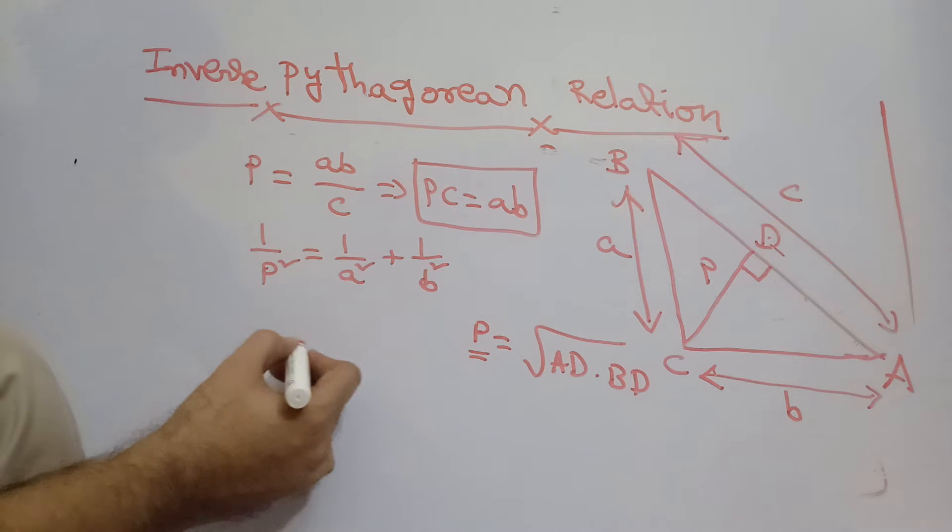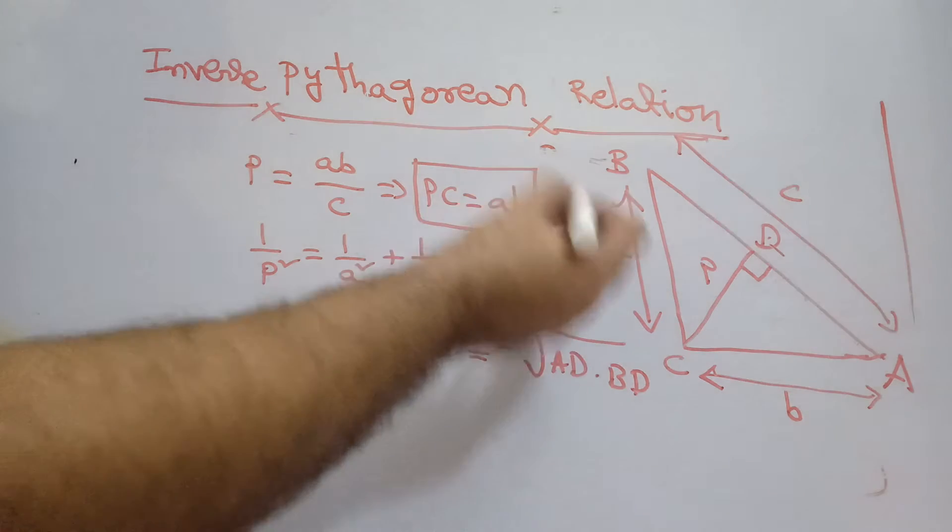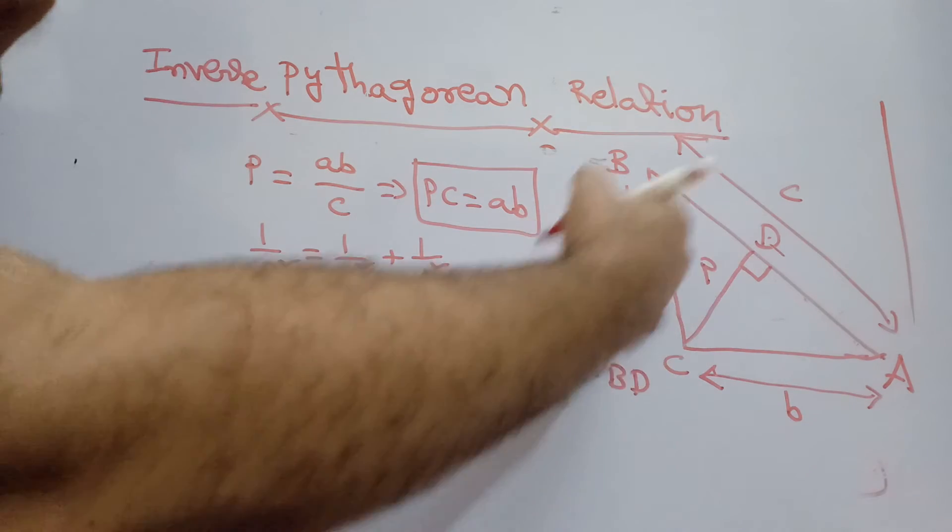The other relationship what we can write for AD times BD is equal to E square by C.